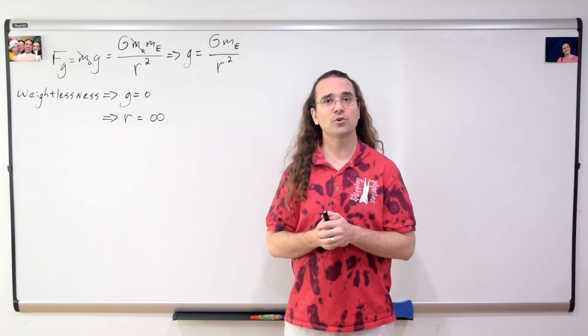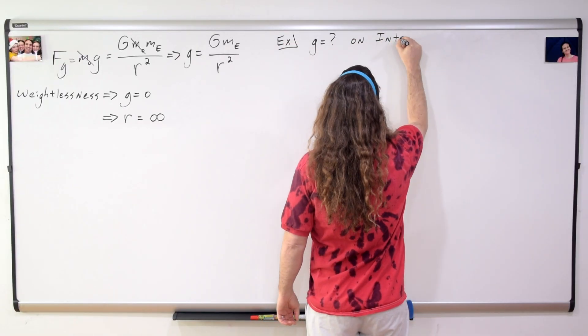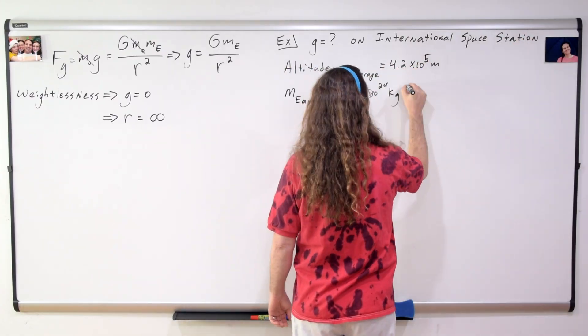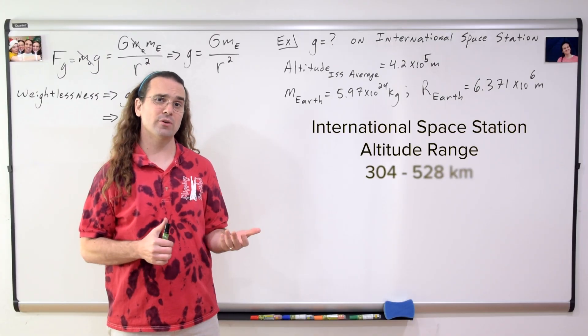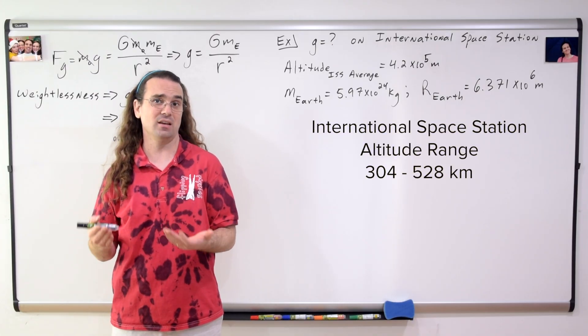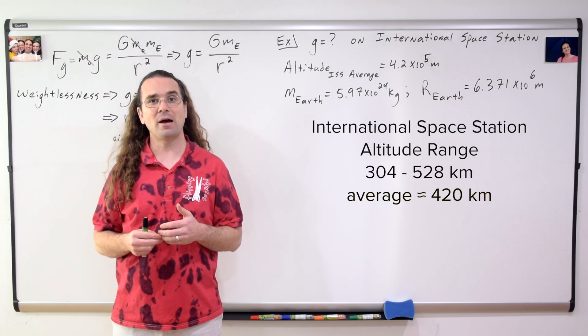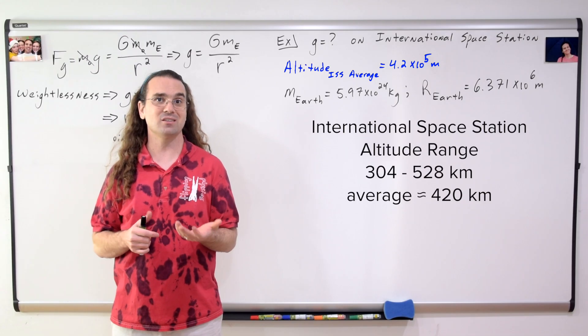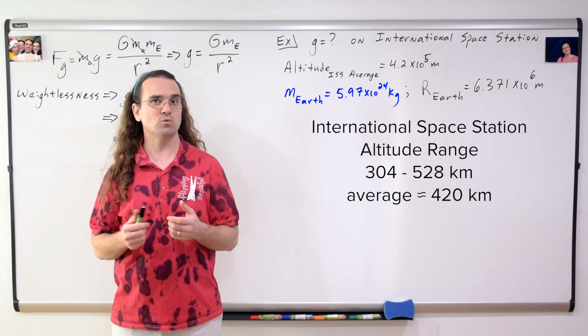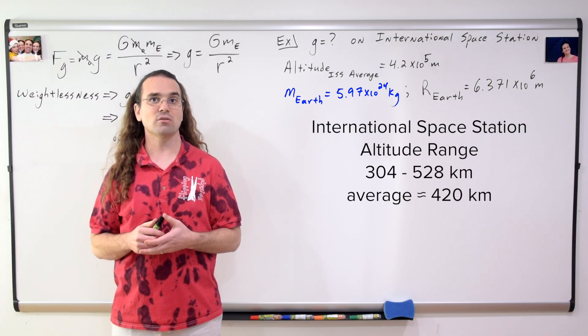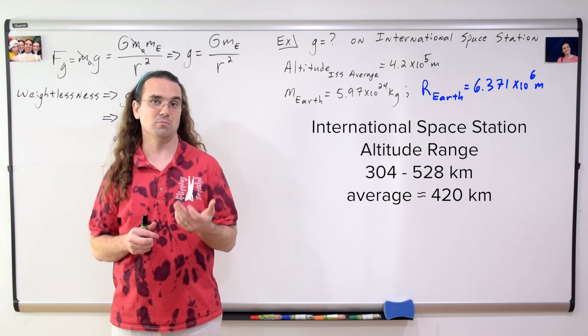That does not make any sense. Astronauts float in the International Space Station, so clearly they are weightless. Let's determine the acceleration due to gravity on the International Space Station. According to NASA, the International Space Station has an orbital altitude that ranges from 304 to 528 kilometers. So let's take an average altitude of about 420 kilometers or 4.2 times 10 to the 5th meters. The mass of the Earth is 5.97 times 10 to the 24th kilograms and the average radius of the Earth is 6.371 times 10 to the 6th meters.